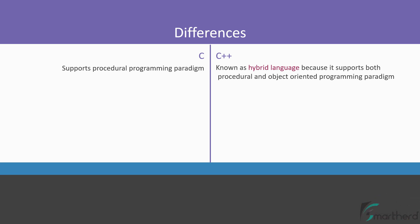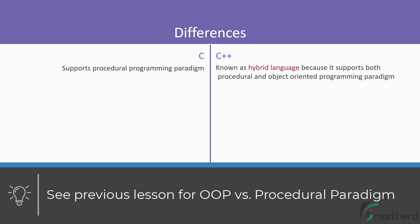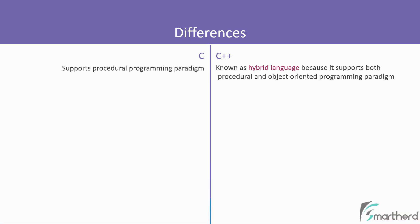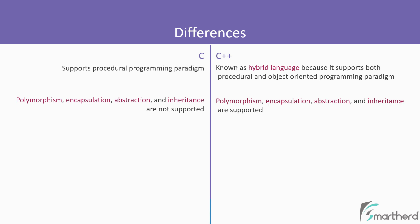What is procedural and what is object-oriented programming paradigm has been discussed in the previous lesson, so please check that out. In C, features like polymorphism, encapsulation, abstraction, and inheritance are not supported. While in C++, they are all supported.